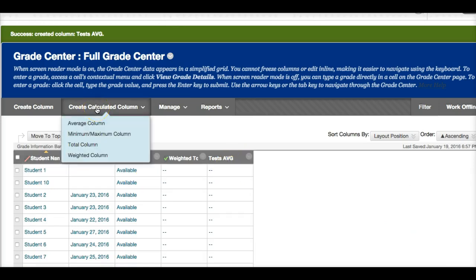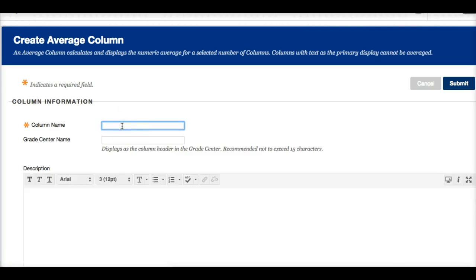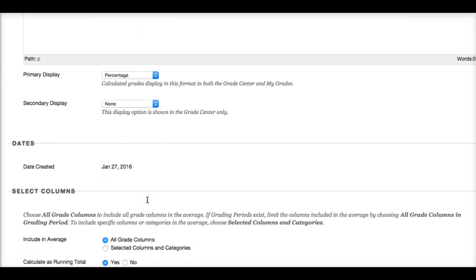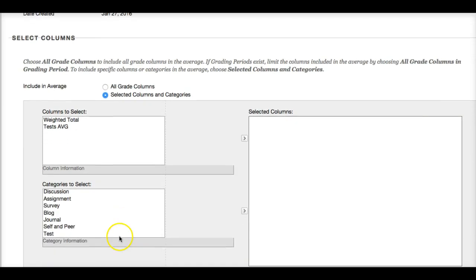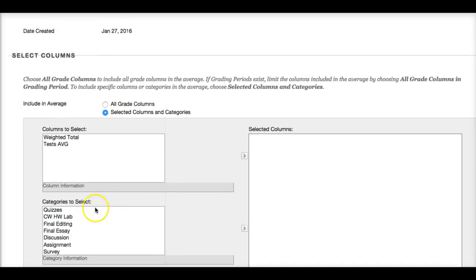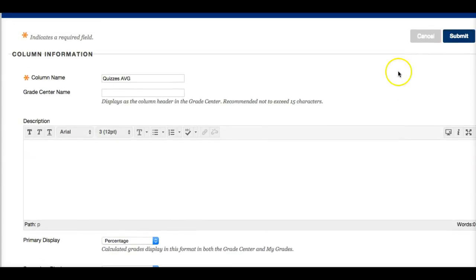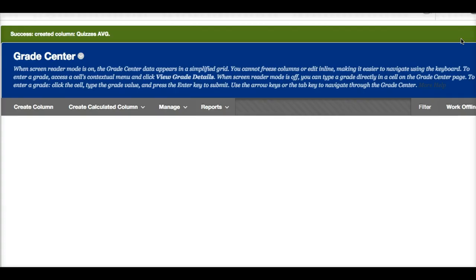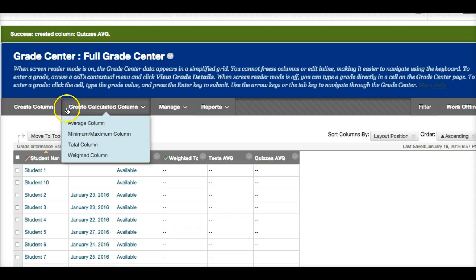We can do that for each of the categories. Average column: quizzes. Percentage. Letter. Selected column. And we want to click on quizzes. And click on submit. So you have a submit button on the top and the bottom. So test average, quizzes average.